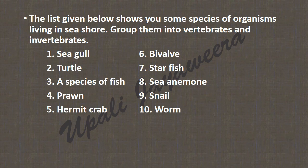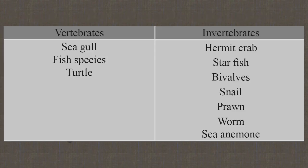The list given below shows some species of organisms living on the seashore — group them into vertebrates and invertebrates. Seagull, fish species, and turtle are vertebrates. Hermit crab, starfish, bivalves, snail, prawn, worm, and sea anemone are invertebrates.